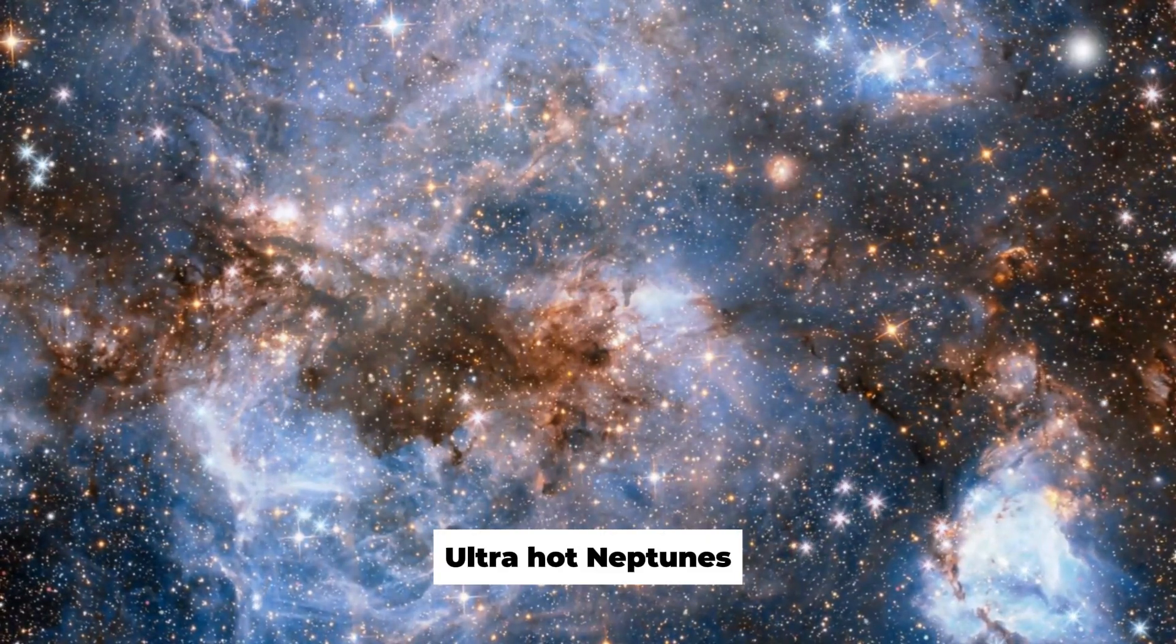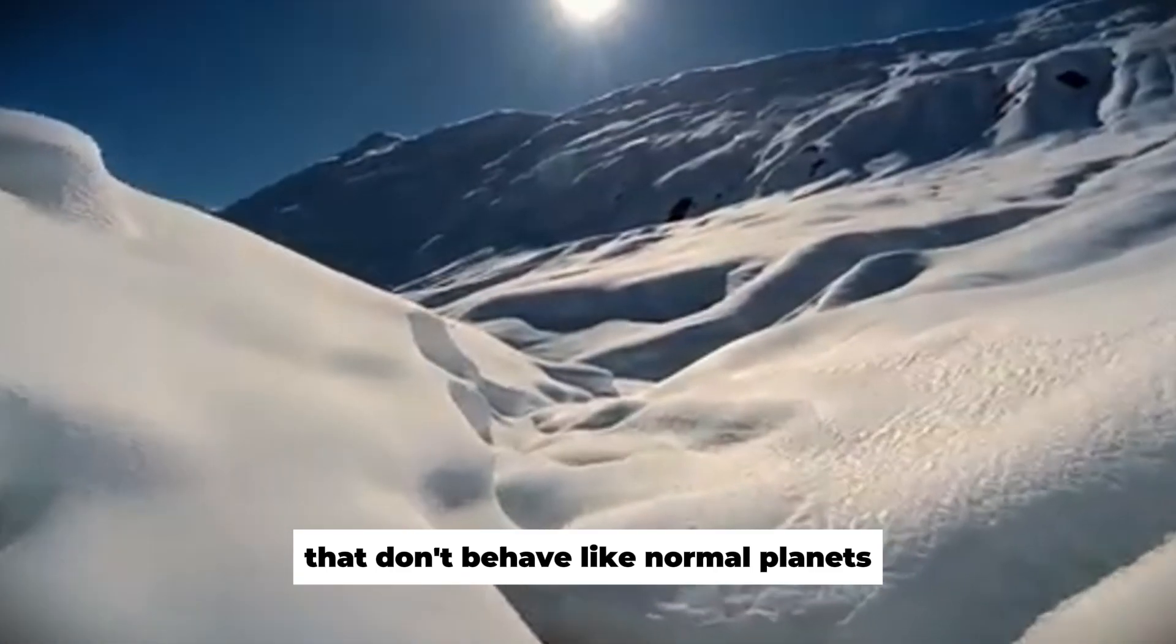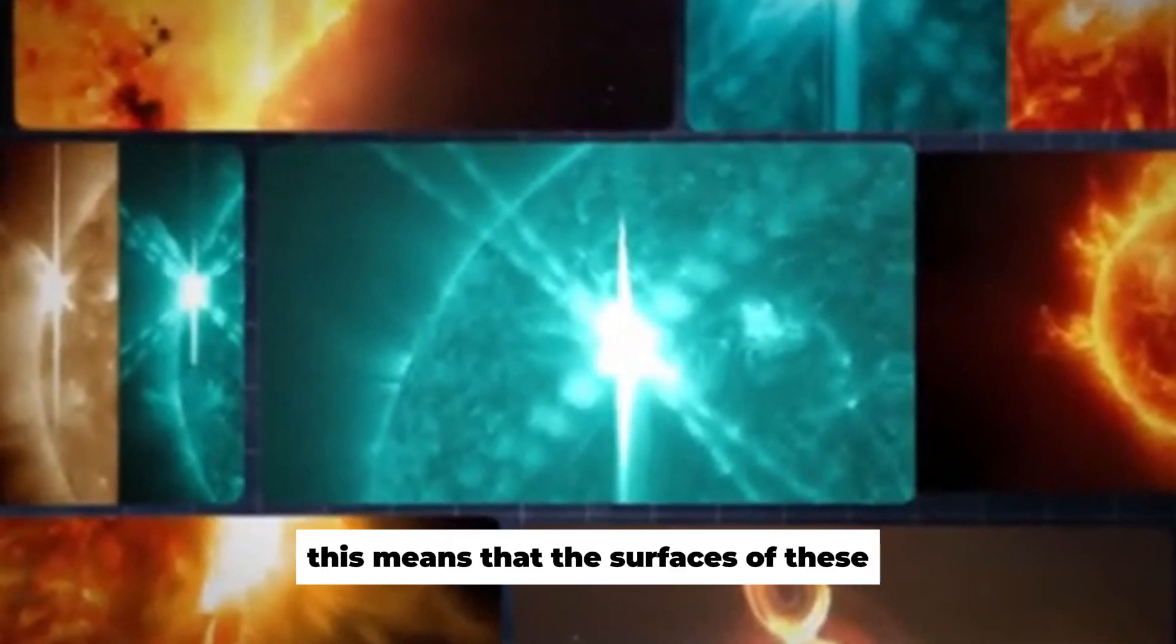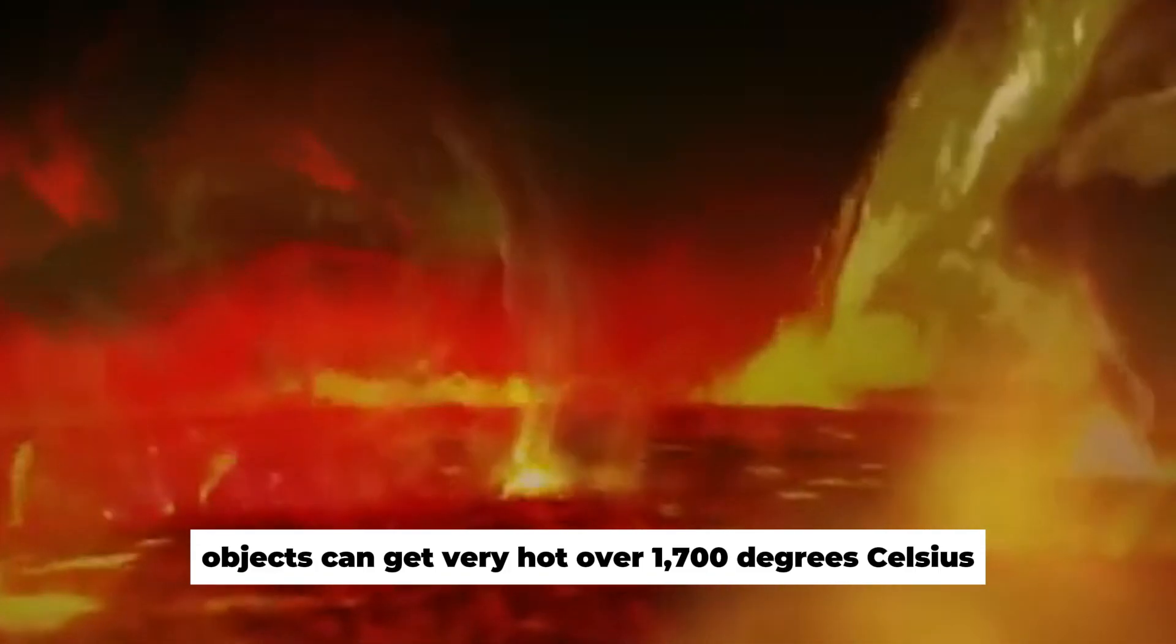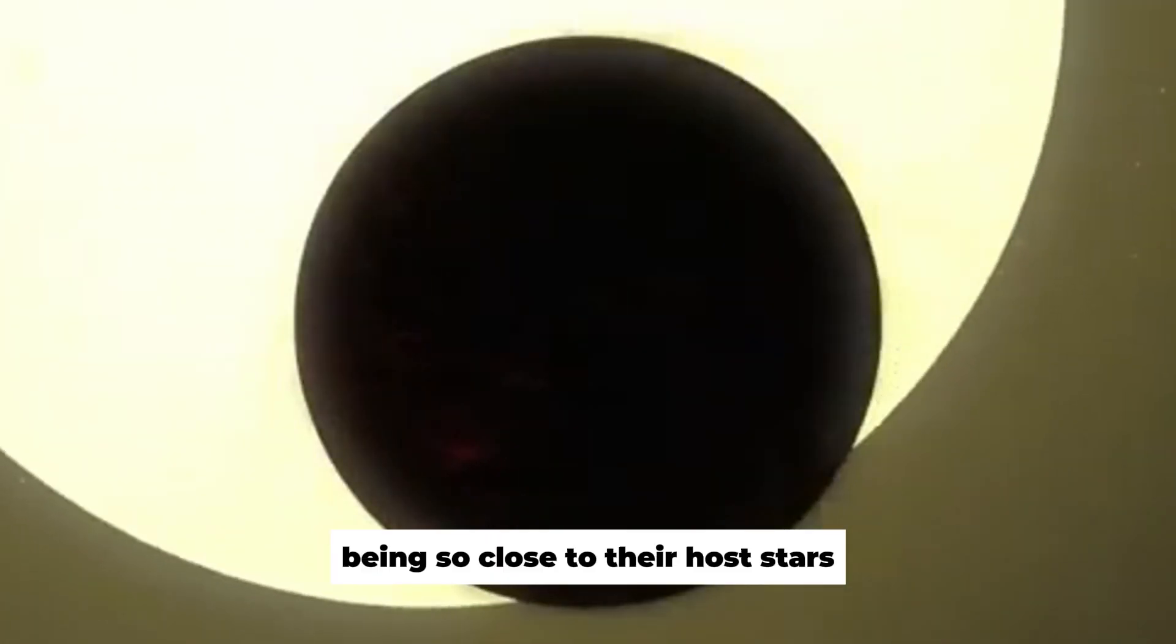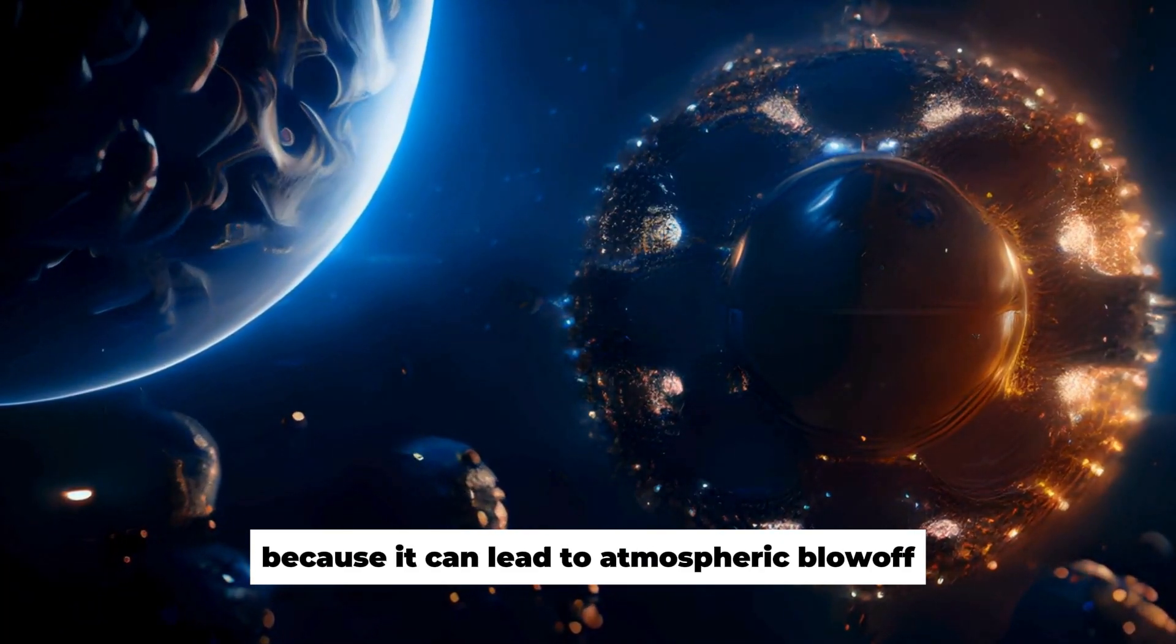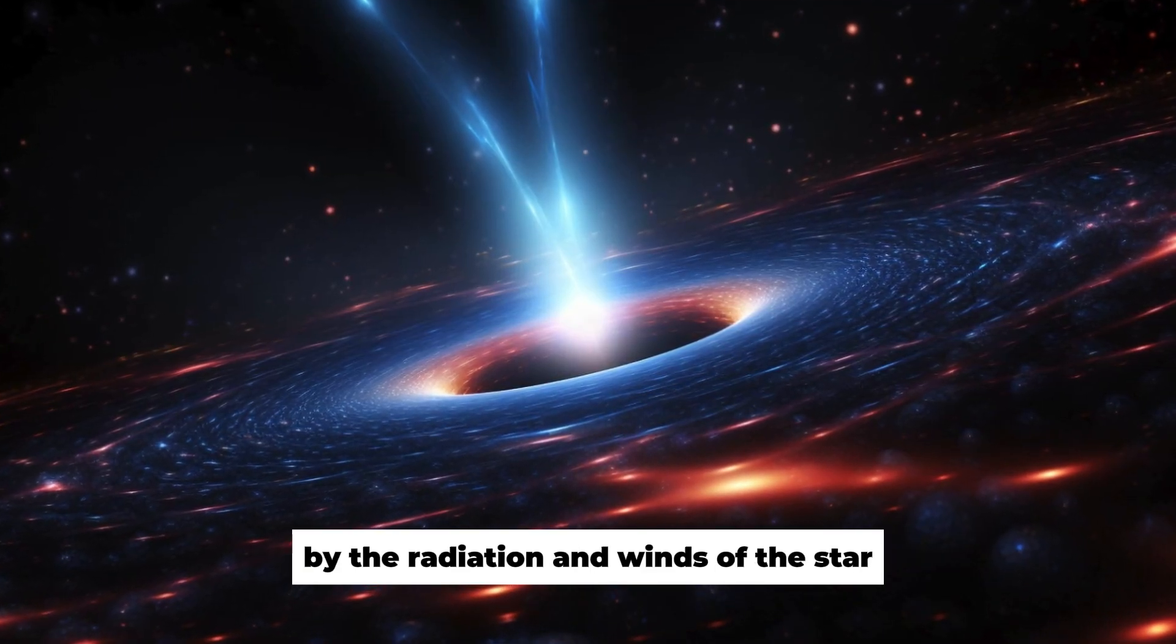Ultra-hot Neptunes are an interesting group of exoplanets that don't behave like normal planets. These objects in space orbit very close to their stars, much closer than Mercury does to our Sun. This means that the surfaces of these objects can get very hot, over 1,700 degrees Celsius or 3,092 Fahrenheit. Being so close to their host stars challenges what we think we know about how planets form and how they stay alive because it can lead to atmospheric blow-off, which is when the atmosphere is actually ripped away by the radiation and winds of the star.